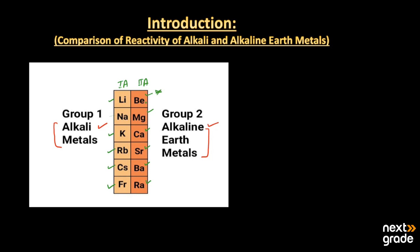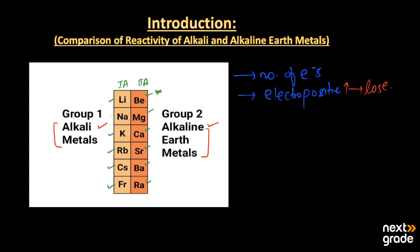We will discuss the chemical reactivity of these groups — which one is more reactive and which is less reactive. The reactivity of alkali and alkaline earth metals depends upon the number of electrons present in their outermost shell, and whether they are more electropositive — meaning whether they can lose electrons easily. This electropositive character is also known as their metallic character, and reactivity depends upon it.